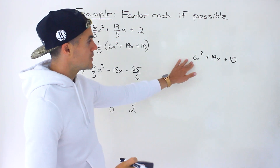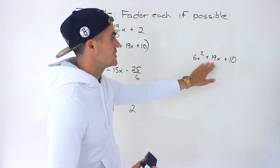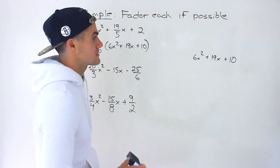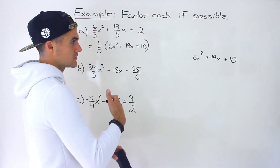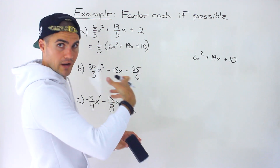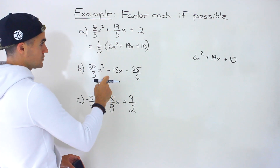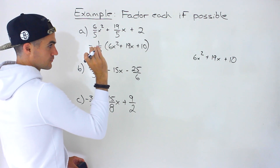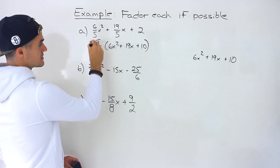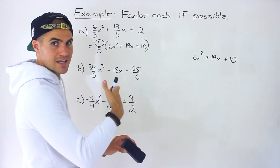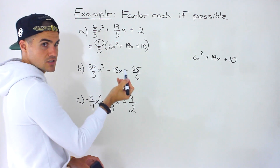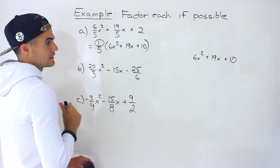So now let's work with this. What's the first thing we always check when factoring a quadratic? Can we take out any greatest common factors? Notice between 6, 19, and 10 — in this case we can't. That's not always going to happen. Sometimes you will be able to take out a greatest common factor, and if that happens, as you'll see in the next two examples, you'd take that greatest common factor and put it over the 5 instead of the 1. But in this case, the fraction in front is just going to be 1 over 5.